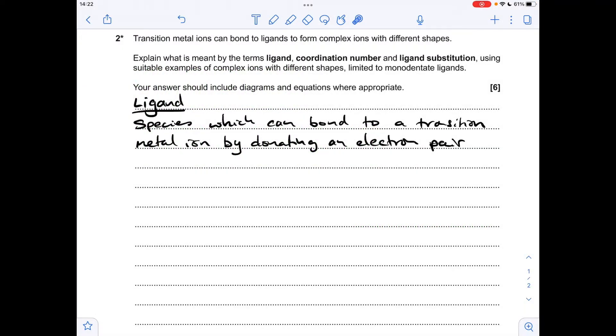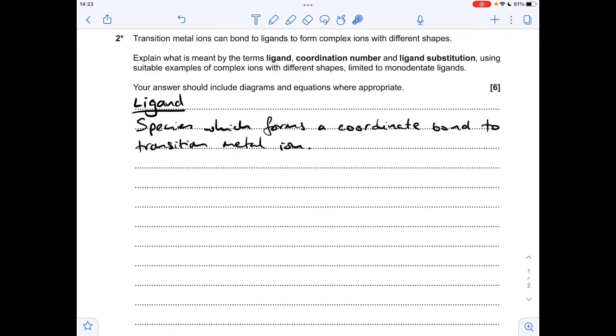So we'll begin with the three definitions. A ligand is a species which can bond to a transition metal ion by donating an electron pair. Or you could say it like this: a species which forms a coordinate bond or a dative covalent bond to a transition metal ion.